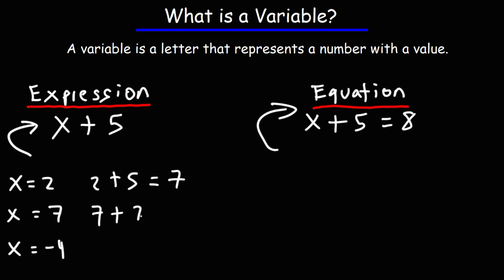If x is 7, the value changes to 14. If x is negative 4, the value of that expression now becomes 3. So for algebraic expressions, a variable can have multiple values.